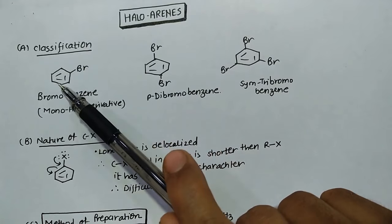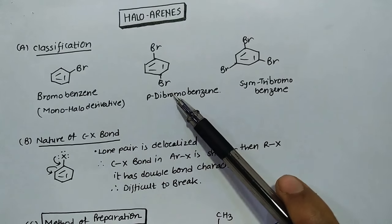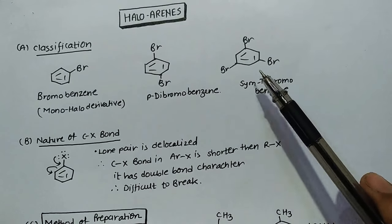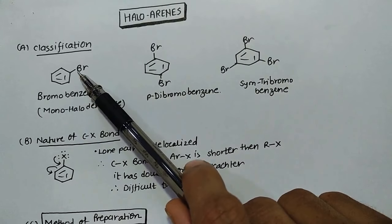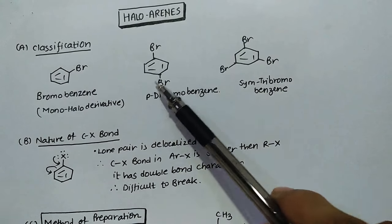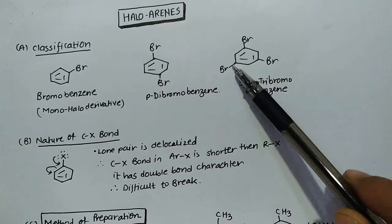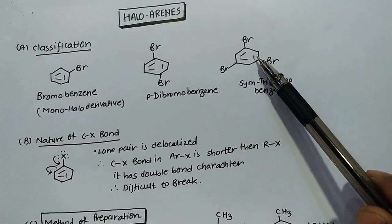Now, how they are classified. In classification, they are classified as mono-halo derivative, di-halo derivative, and tri-halo derivative. For example, bromobenzene, para-dibromobenzene, and sym-tribromobenzene or 1,3,5-tribromobenzene.